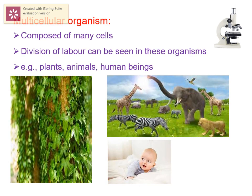Organisms which are made up of many cells are called multicellular organisms. For example, all higher plants, animals, and human beings are multicellular. In multicellular organisms, there is division of labor. Different cells perform specific functions.